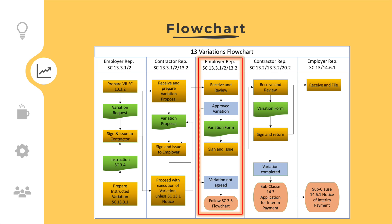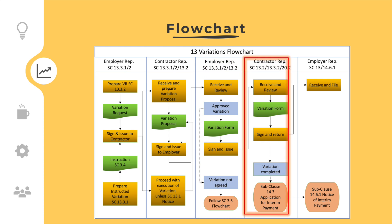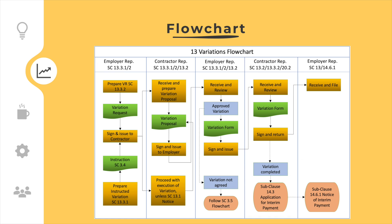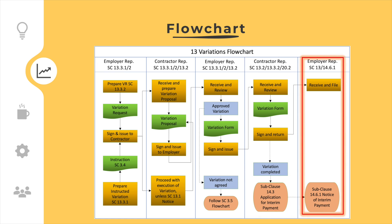The contractor shall sign and return the variation form, and when the variation works are completed, inform the employer and apply for an interim payment for the variation. The employer representative shall issue a notice of interim payment after receipt of the application for interim payment for the variation.